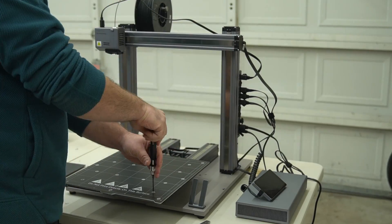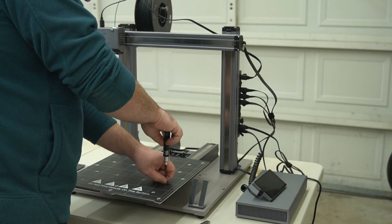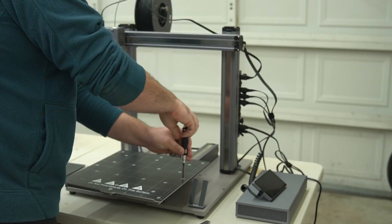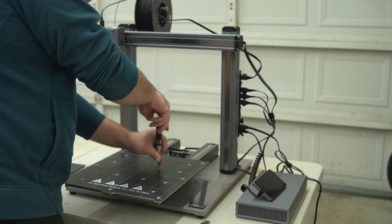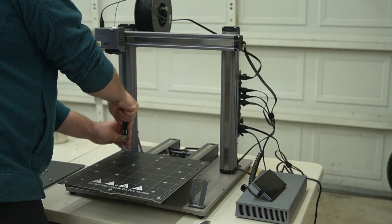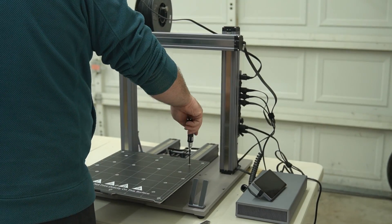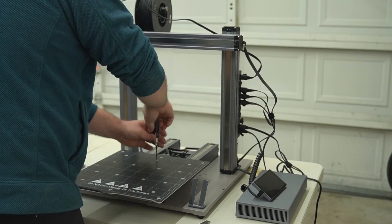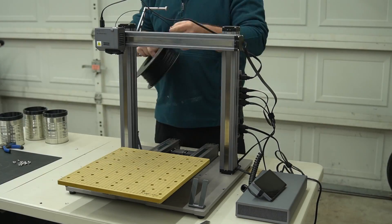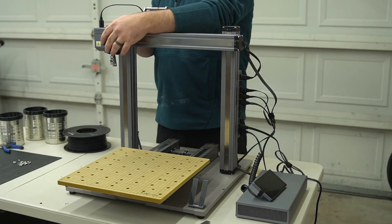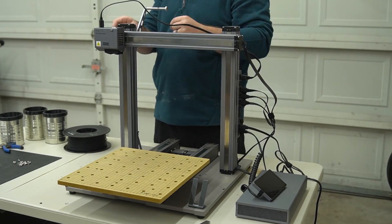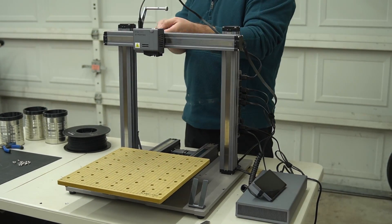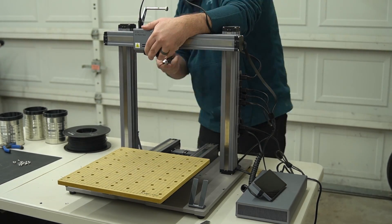Number two is I thought switching between the different modules would have been a little easier. There's about 24 screws you have to undo and redo every time you want to switch, and it's called a Snapmaker. I figured something would snap into place, like the head would snap, or the work tables would snap into place. But nonetheless, it only takes 10 minutes to switch, and that's not bad at all.